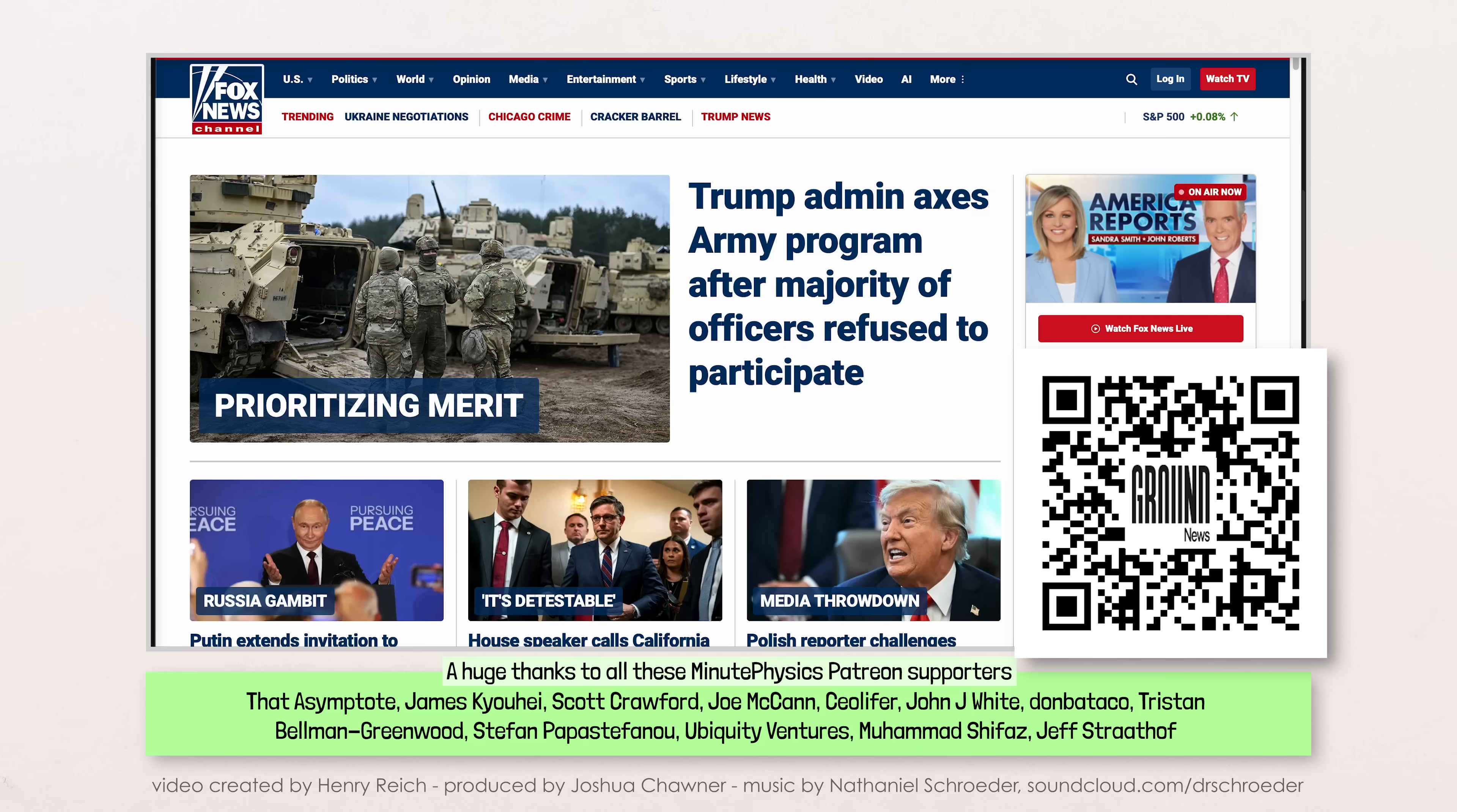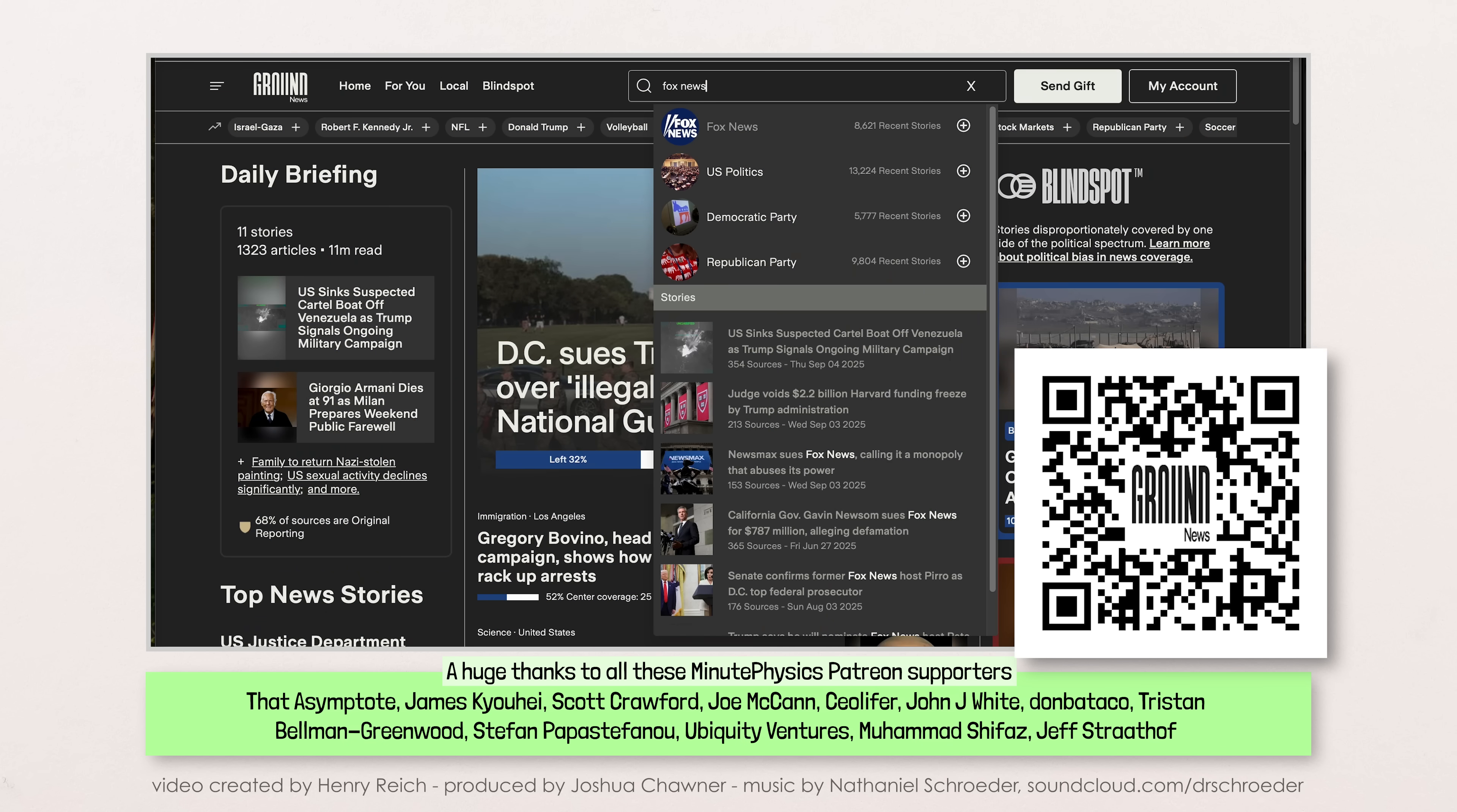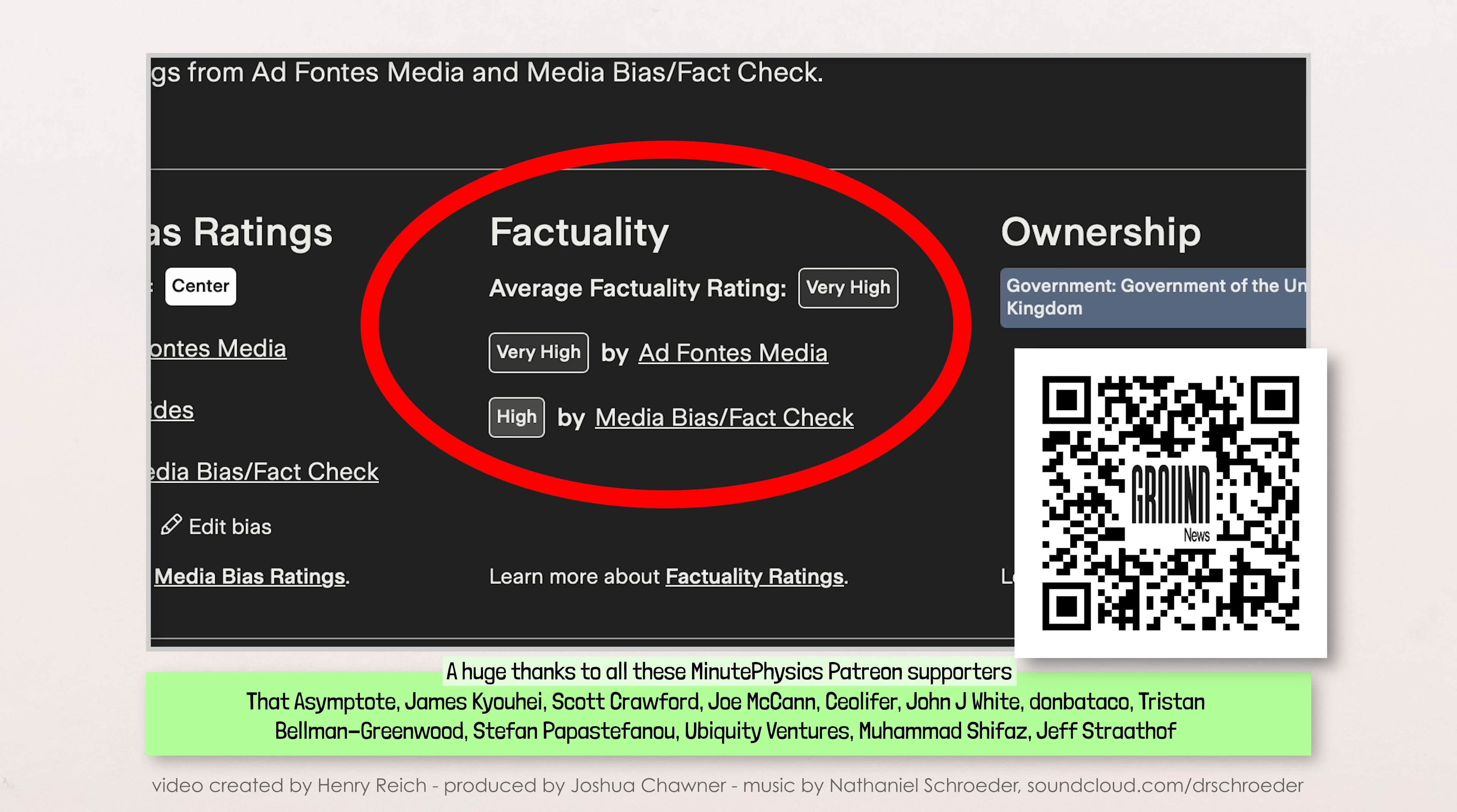In my personal life, I often open up the Fox News homepage just to have a sense of how things are being reported there, and what news stories they're making a big or little deal out of compared to my normal news sources. Which are not Fox News, because as you can see with Ground News' factuality ratings, Fox has mixed factual reliability, and I'd rather get my news from places with high factual reliability.